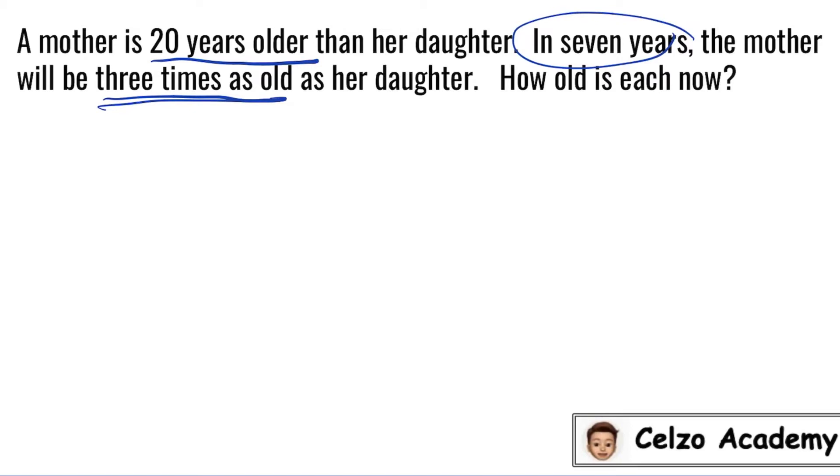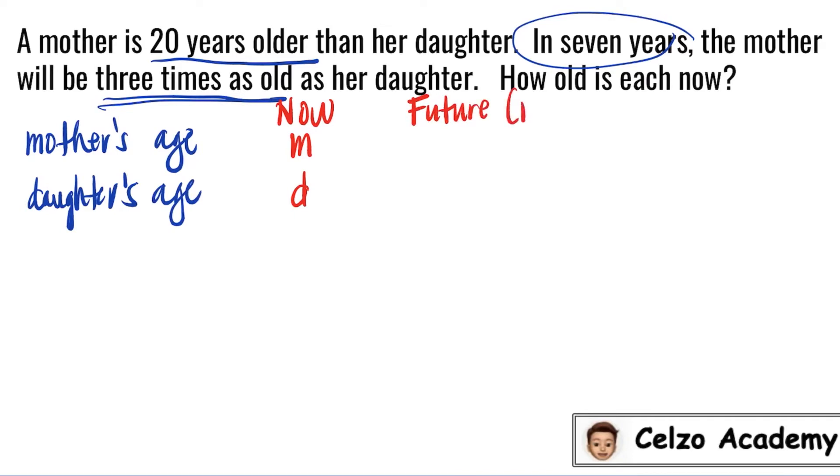So in this problem, we need to solve for the age of the mother and the age of the daughter as well. For the age now, we will represent M for the mother's age and D for the daughter's age. We will also represent the future age, which is in 7 years.